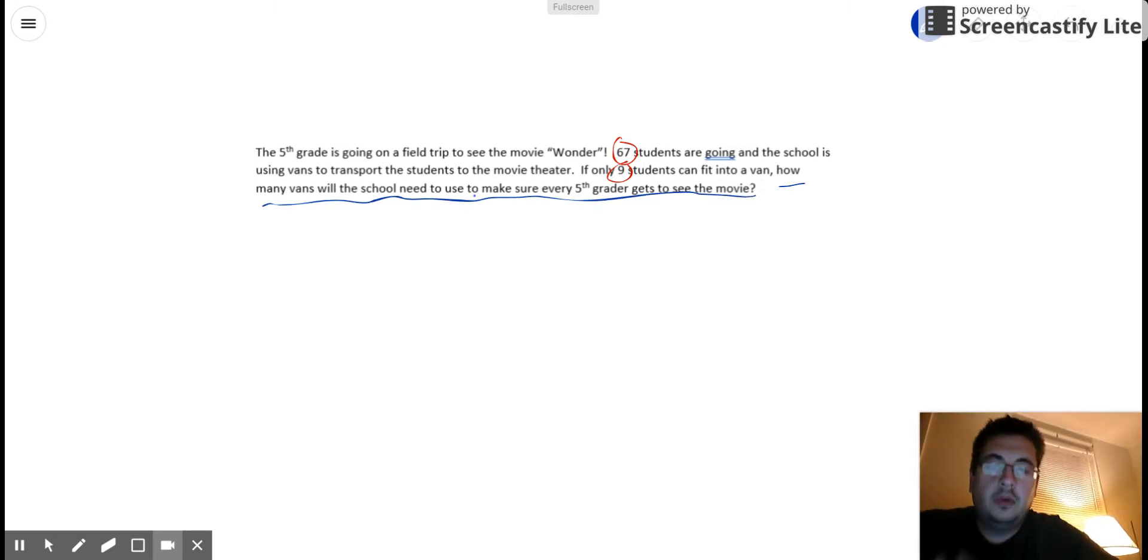So in order to answer that question, we need to know what operation are we going to be using to solve this question? So we're going to add, subtract, multiply, or divide. Well, we have a total in this problem, and the total is 67 students. When you know a total, you can use division.